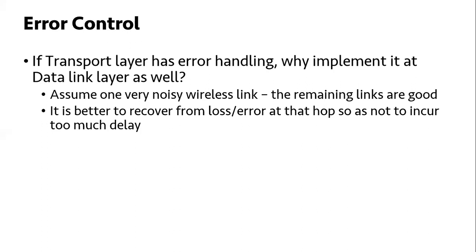So the strategy is: you always do transport layer error handling. But if there is an underlying link with a chance of corruption, you can add error control there too. If you have a wireless router, the wireless protocol will have error handling. On the other hand, if you have a fiber optic protocol as the underlying link, there may be no need for additional error handling because in fiber optic, the chance of corruption is almost zero. This is basically the philosophy of where you do error handling.